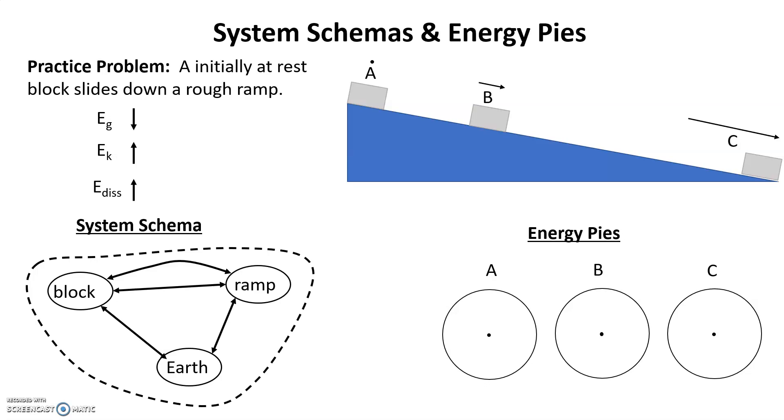Let's start with one of the energy storages. I can start with any of them, but I think I'm going to start with EG again. At the very top, it's not moving. Notice there's a dot above the A. It's not moving whatsoever, so that means it's not sliding yet. There's no motion yet, and so it just has a lot of height. That means at A, it's all gravitational energy storage.